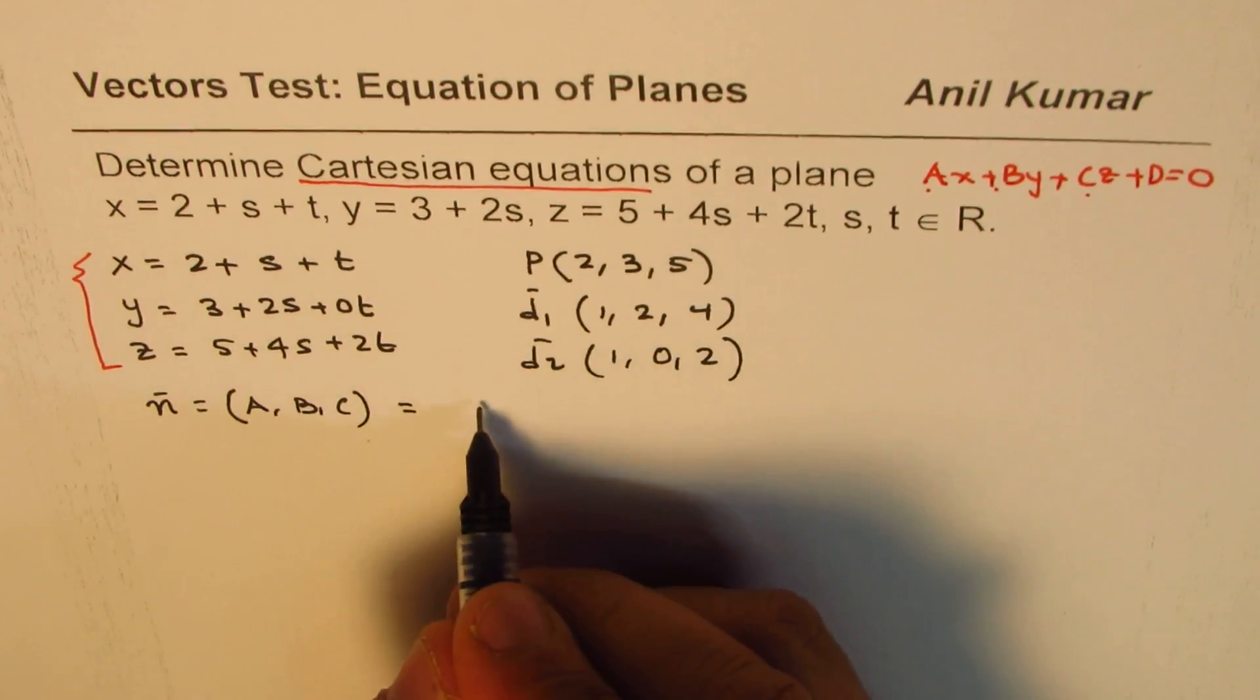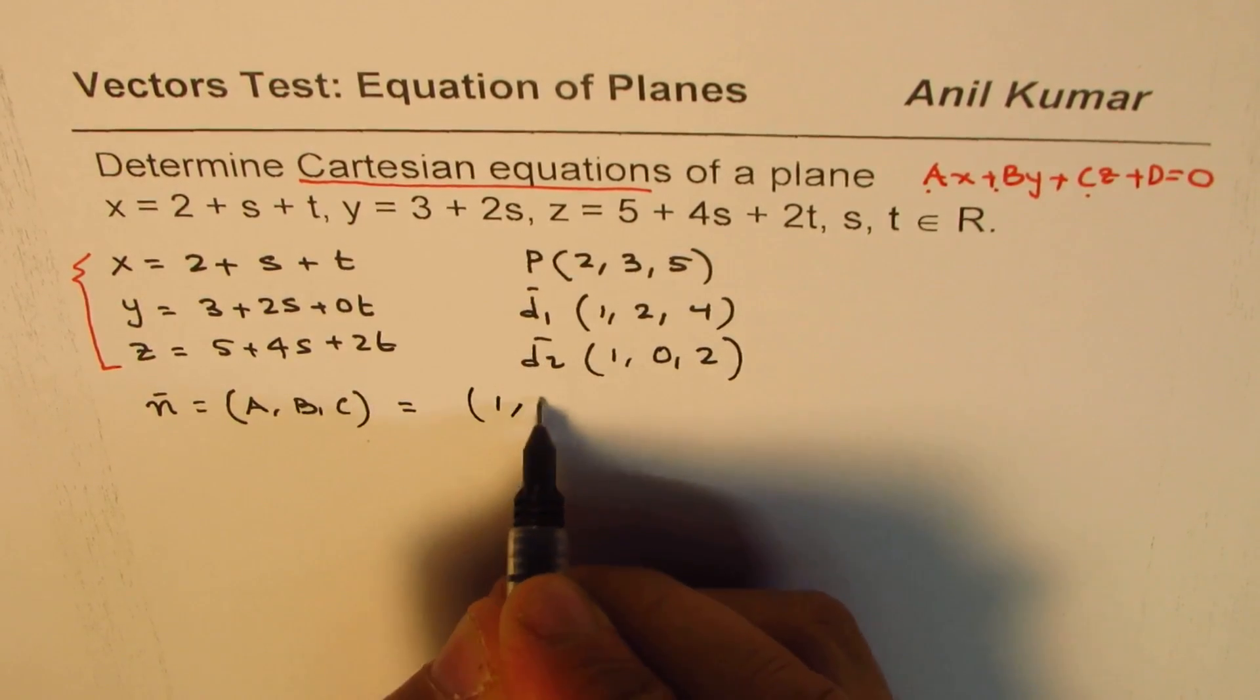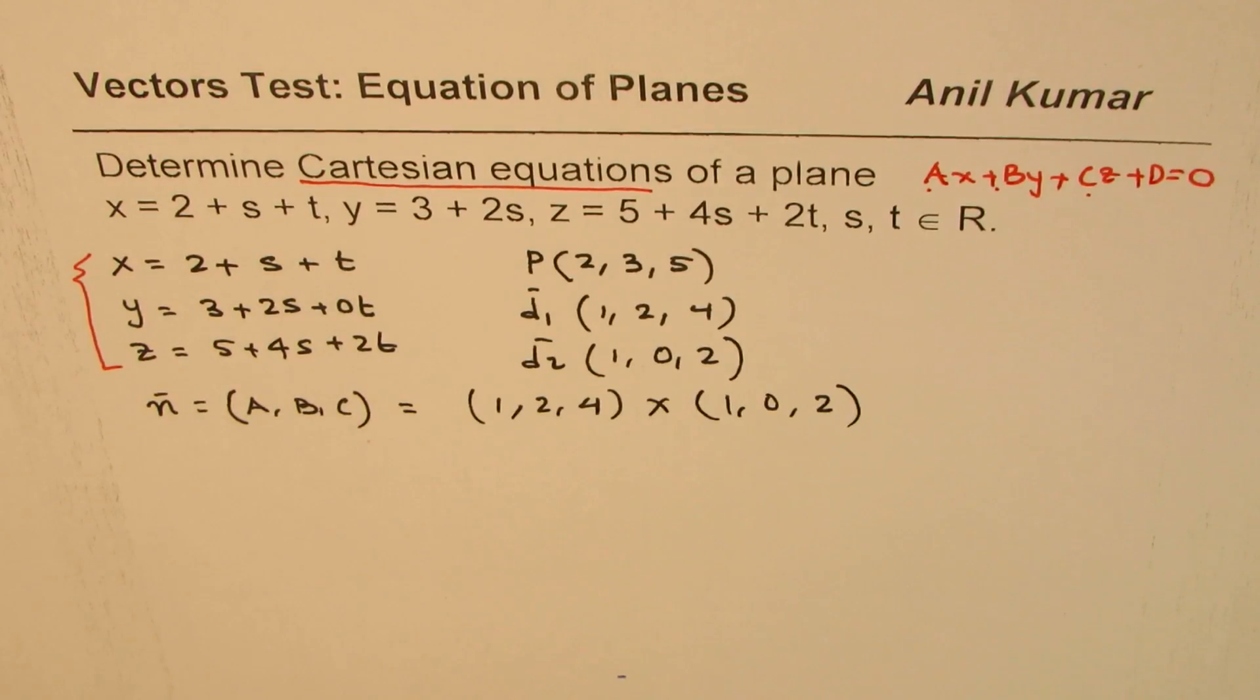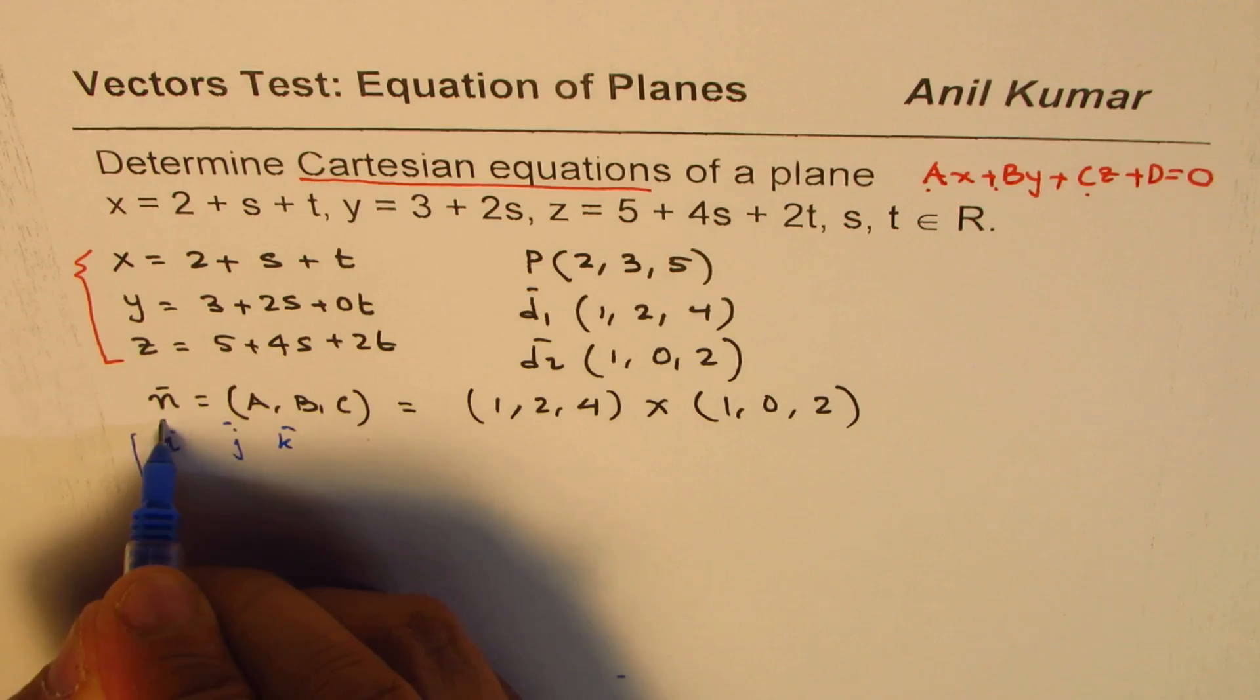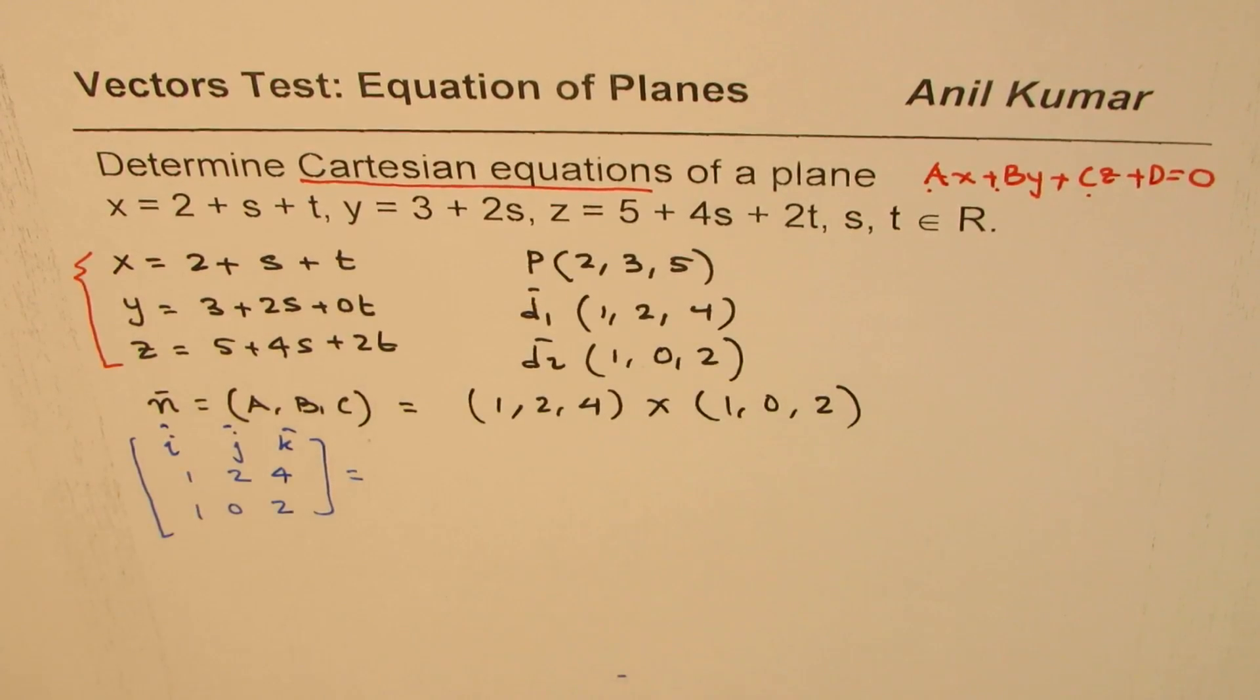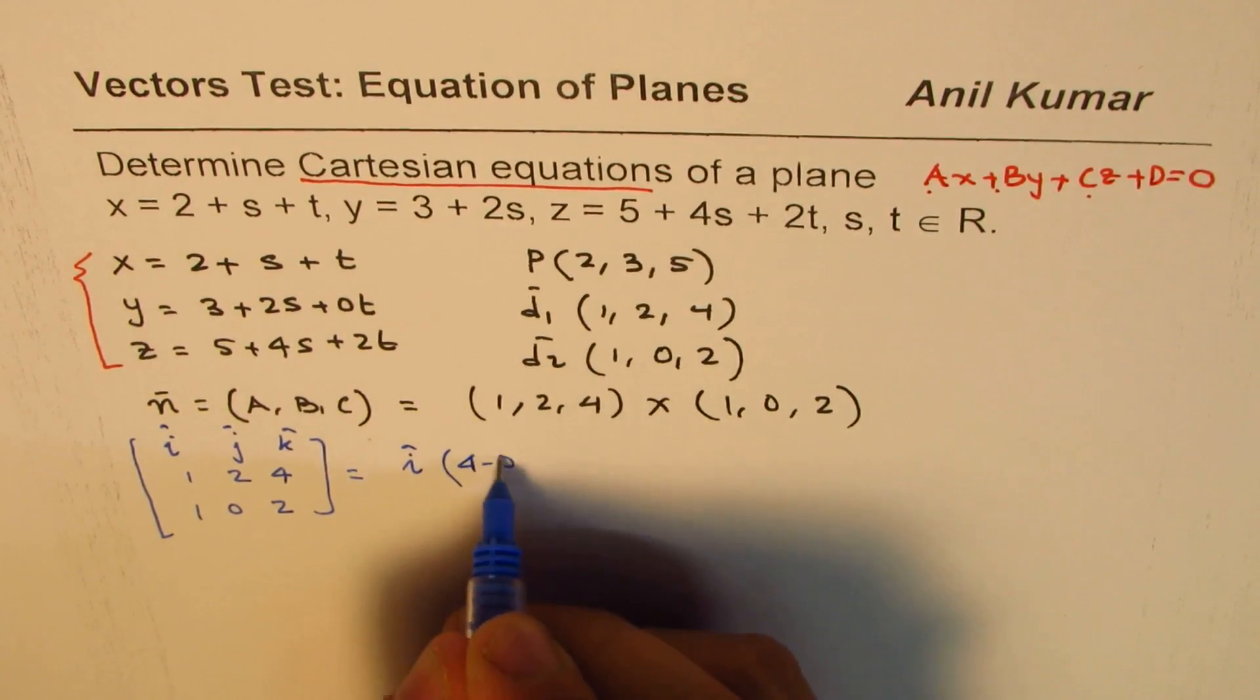You get it by the cross product of these two direction vectors. So d1 × d2, or (1, 2, 4) × (1, 0, 2). Let me do this cross product using the matrix method with unit vectors i, j, k along x, y, z axes. That gives us i(4 - 0) minus j(2 - 4) plus k(0 - 2).